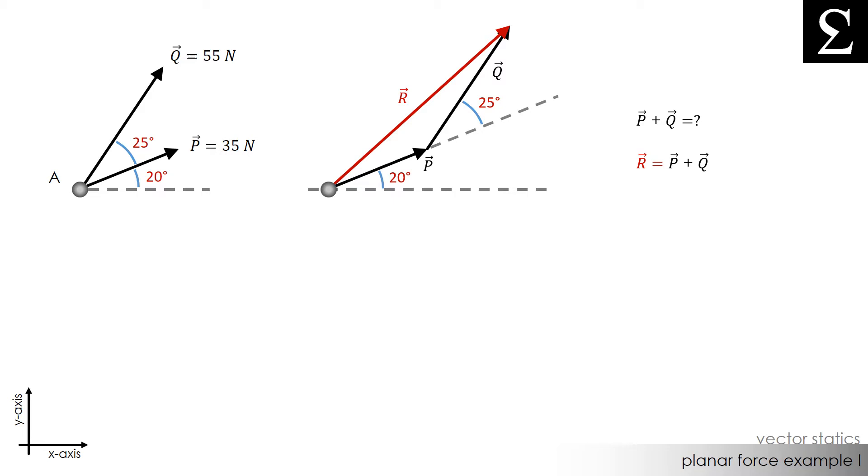If we take vector Q and we move its tail to the tip of vector P, we can then draw a resultant vector R as shown. P is still 20 degrees above the horizontal, and Q is still 25 degrees above vector P. The R vector here is equal to vector P plus vector Q.